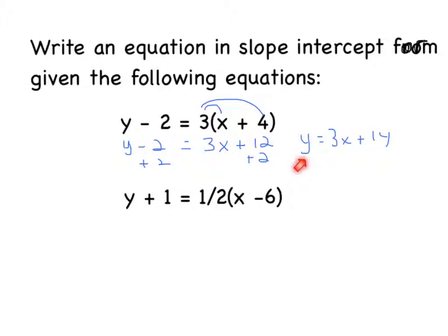So the last example, again, you have to start by doing the distributive property, 1 half x minus 3. I'll rewrite the rest.